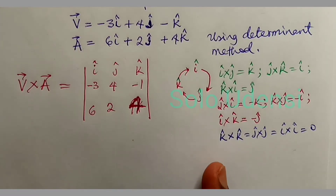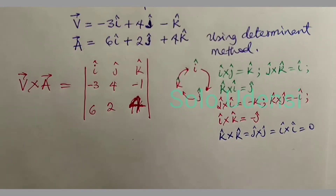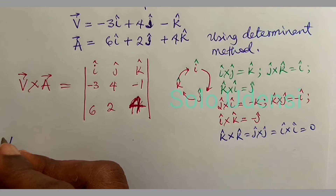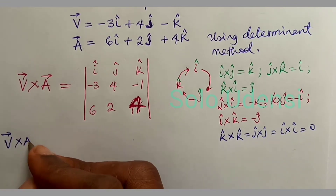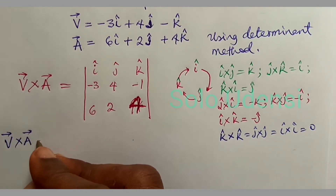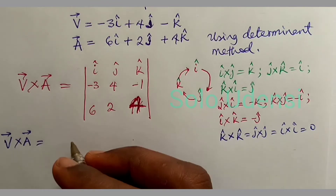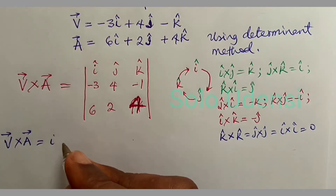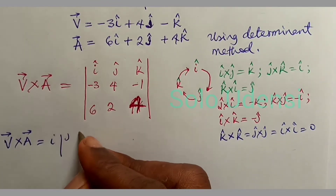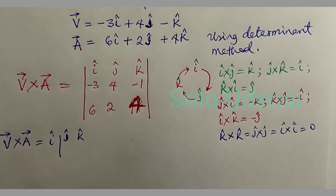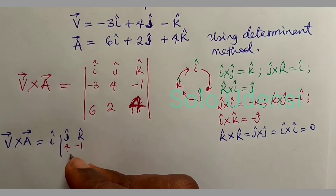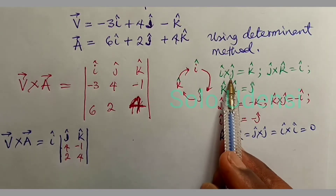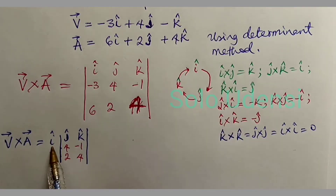Having known this, let us now solve this. V cross A is equal to the determinant with first row I, J, K; second row 3, 4, −1; third row 6, 2, 4. For the I component, we look under J and K, giving us 4, −1 and 2, 4.